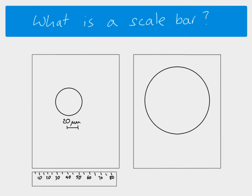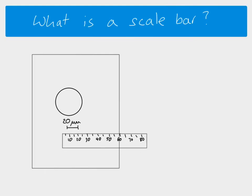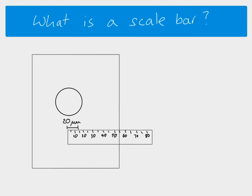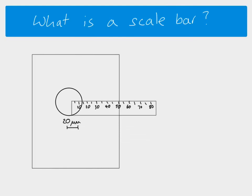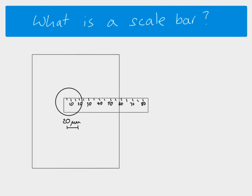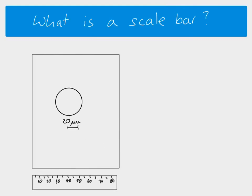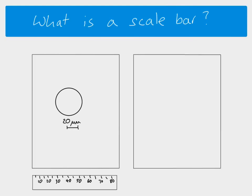That means if you were to take a ruler and measure the length of the scale bar — that's 15 millimetres — then 15 millimetres anywhere on your image, anywhere on the cell, was actually 20 micrometers.